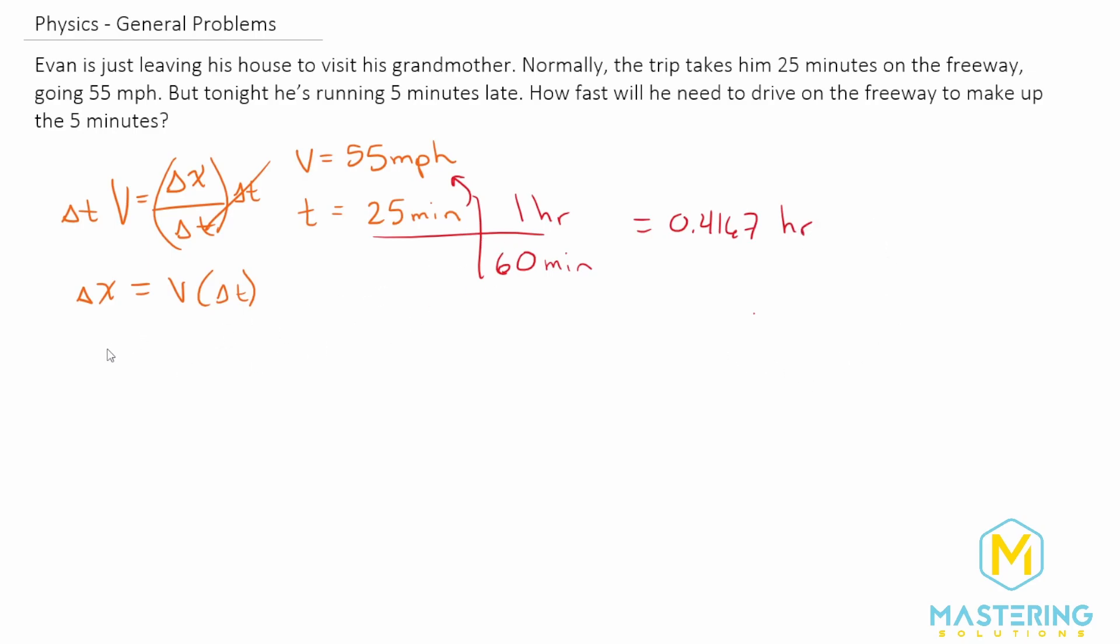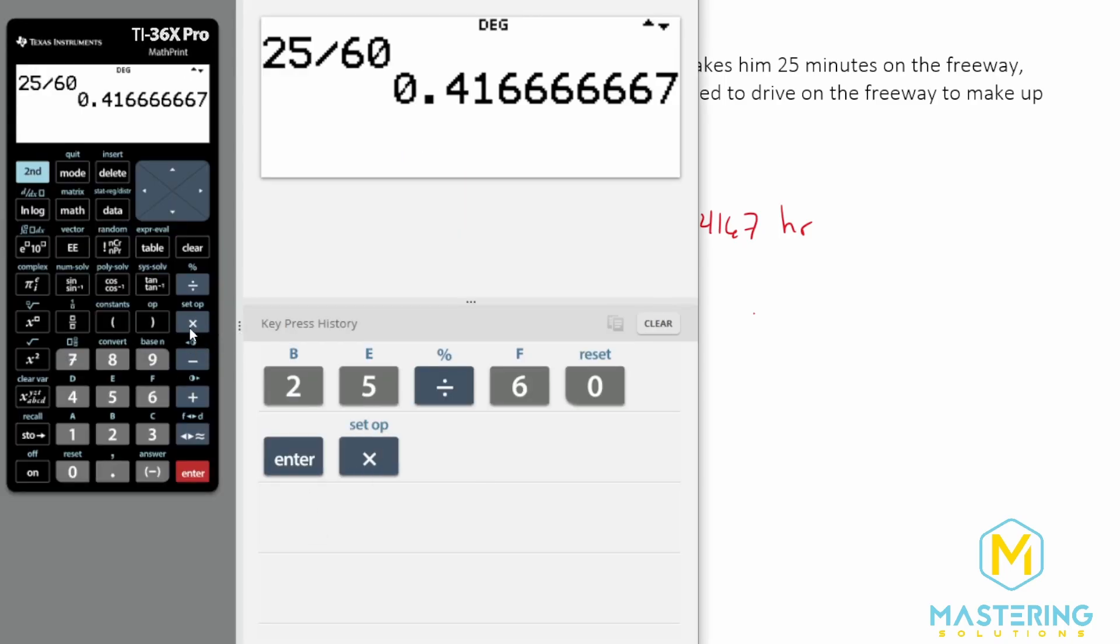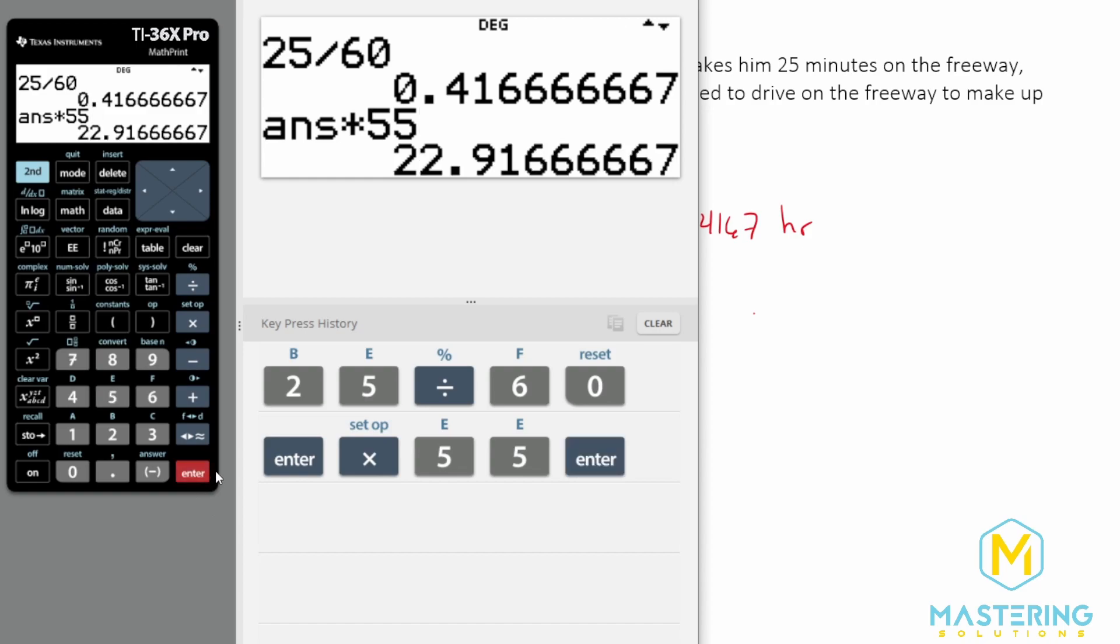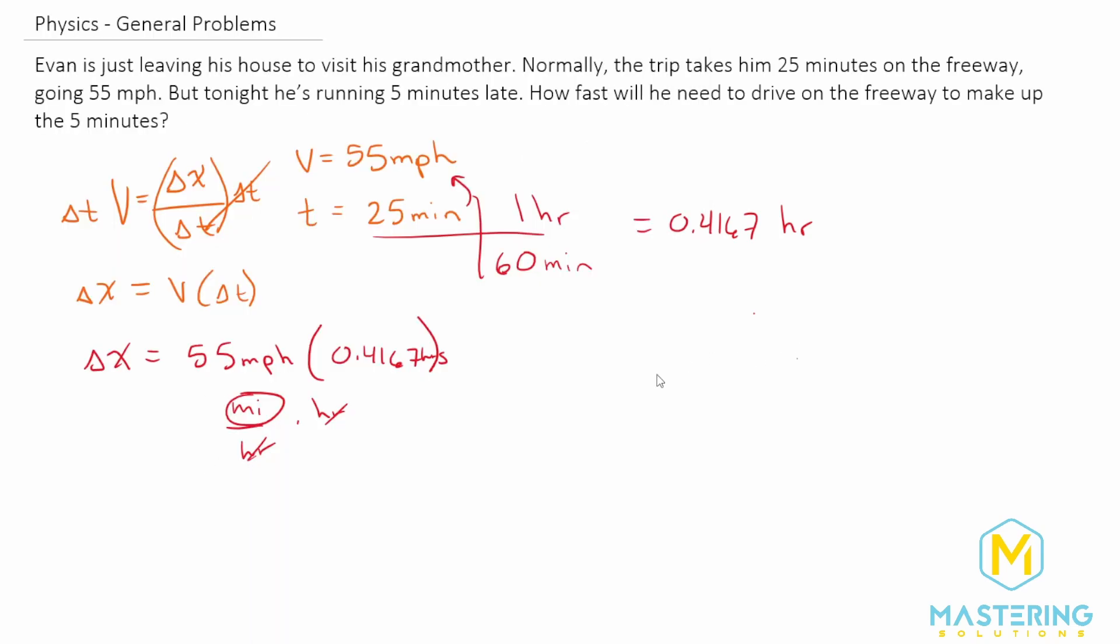Now let's plug all of this into our equation. Delta x equals the velocity, which we said was 55 miles per hour, and when we multiply that by 0.4167 hours, the hours cancel, leaving us with miles. So 55 times 0.4167 gives us 22.92. The distance that he drives to his grandma's house is 22.92 miles.